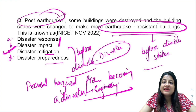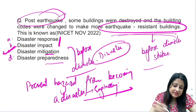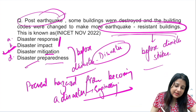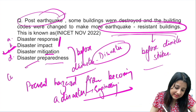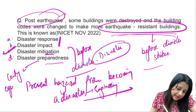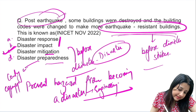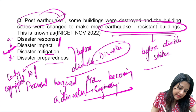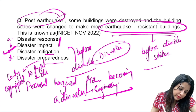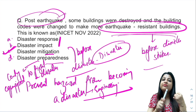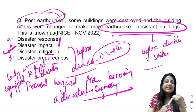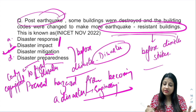Disaster preparedness refers to how well a country is equipped to fight a disaster. In this we are referring to the three M's: does the country have enough Money, Material, and Manpower to manage a disaster?